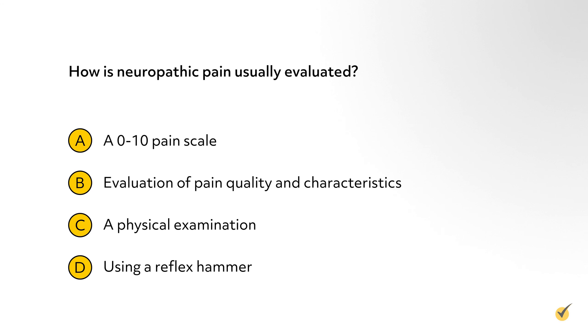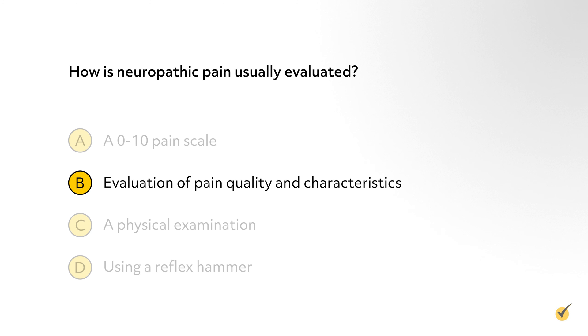The correct answer to question one is C — neuropathic pain is chronic, not acute. The correct answer to question two is B. Instead of a pain scale, the nurse will evaluate the characteristics of the pain, usually via a patient-completed questionnaire. That's all for this review. Thanks for watching and happy studying!